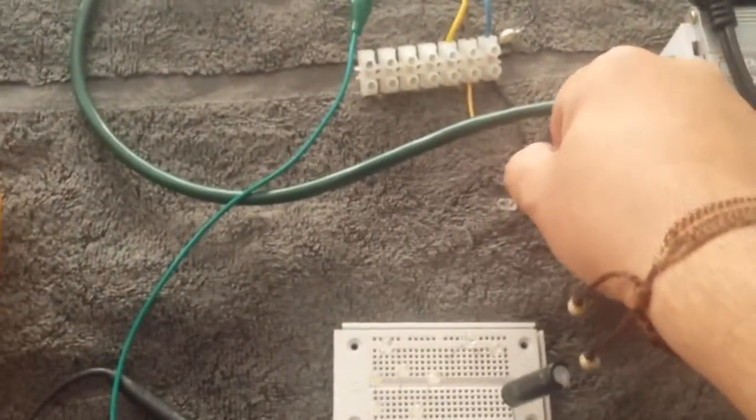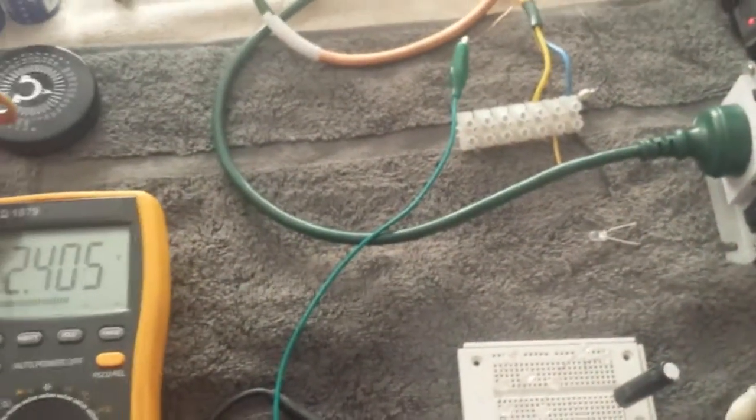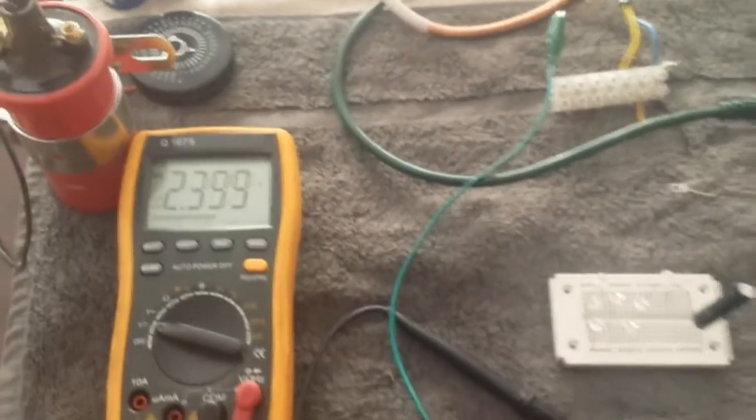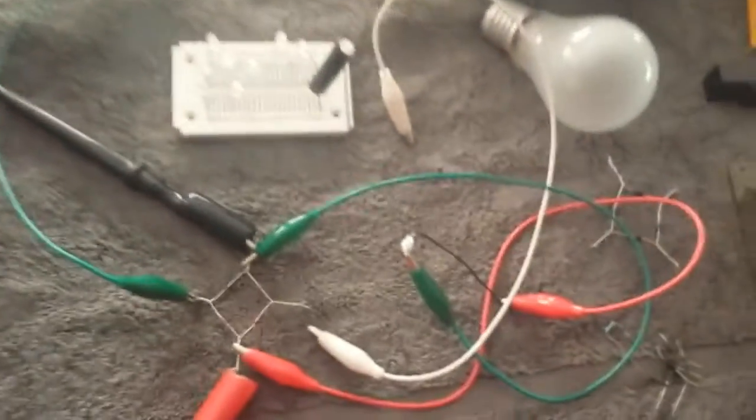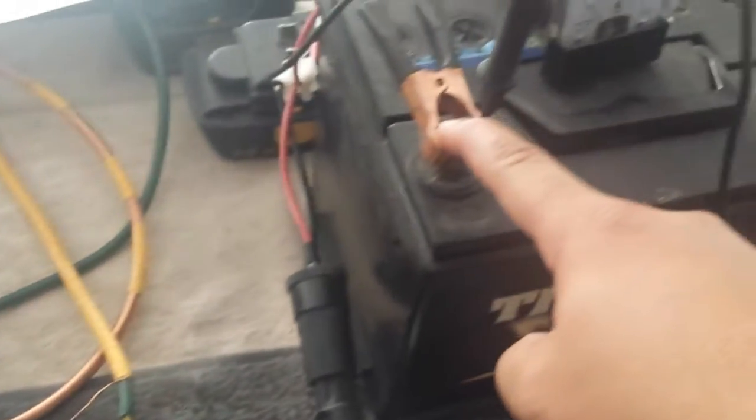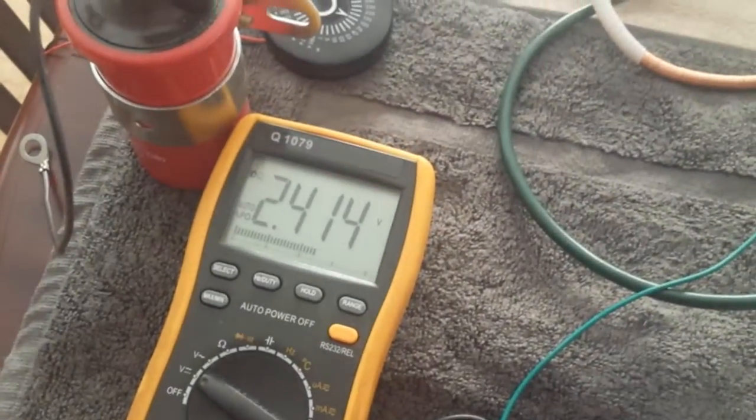But what's interesting is, if we take the live wire off so it's not actually connected. Now, look at the voltage, when all I'm doing is touching the negative of the battery, it goes up a little bit.